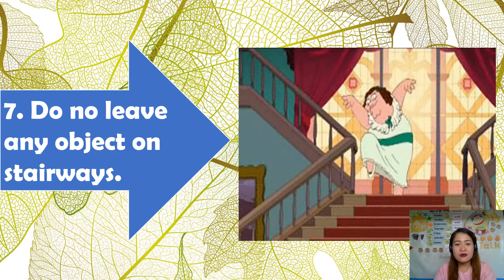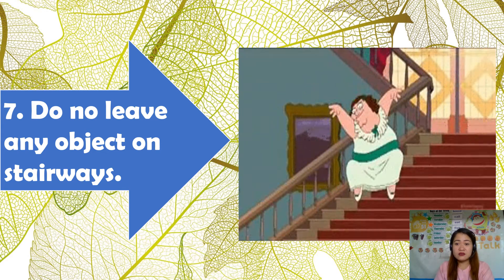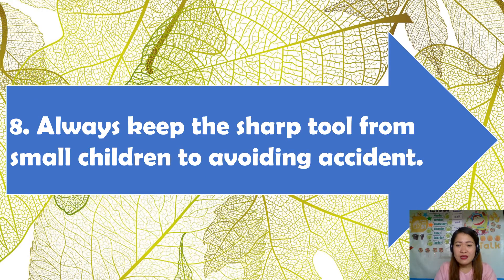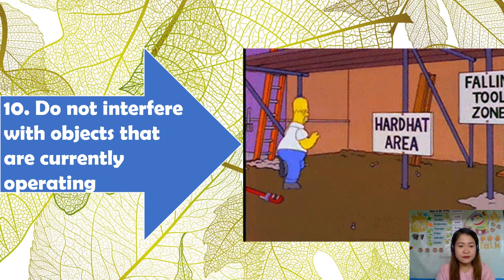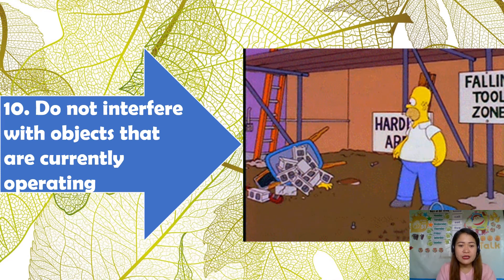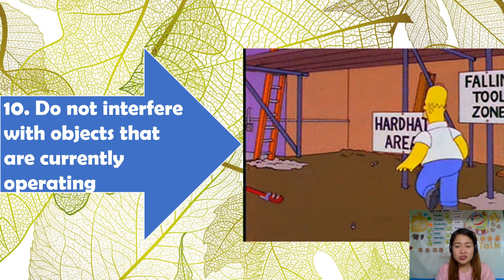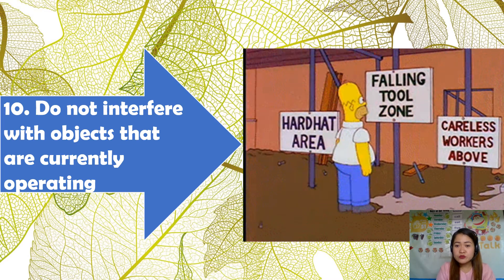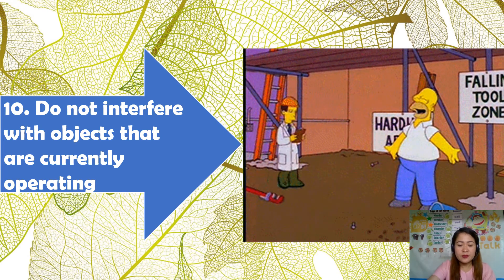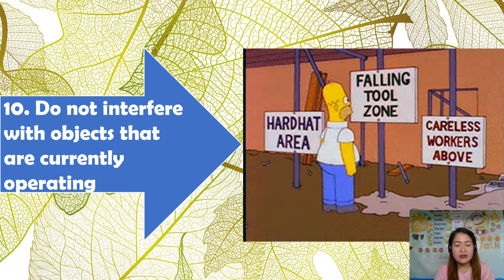Number seven: do not leave any objects on stairways. Number eight: always keep sharp tools away from small children to avoid accident, and be sure that any tool is in good condition before using it. Also, do not interfere with objects that are currently operating, most especially at a construction site. We have to wear proper protective gear and a proper hard hat to be safe at all times.